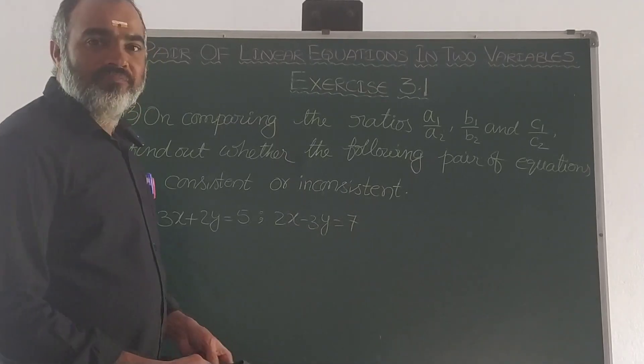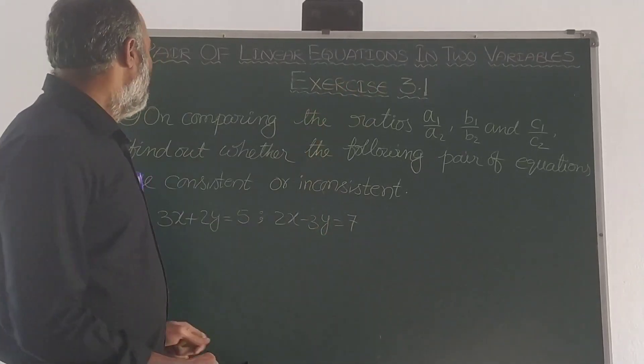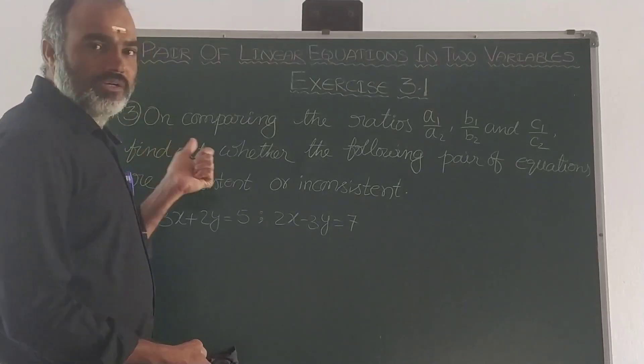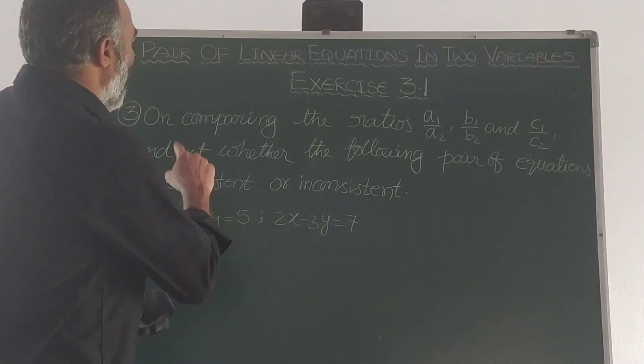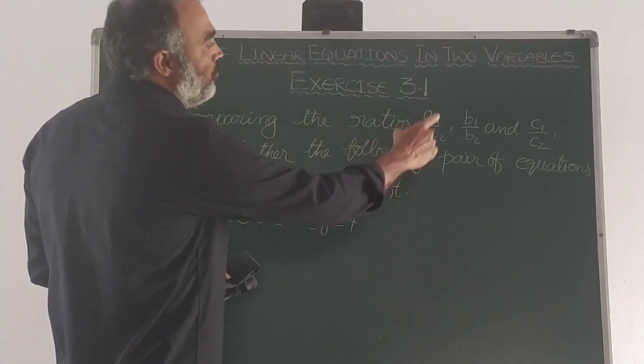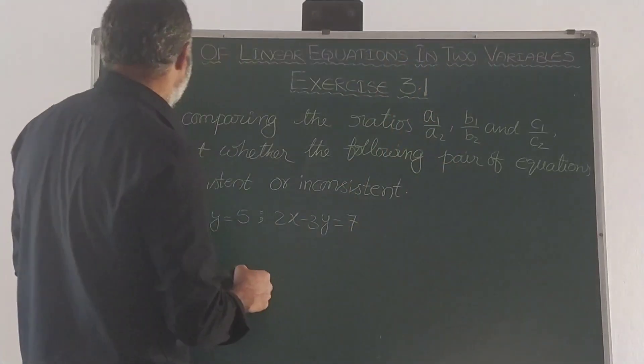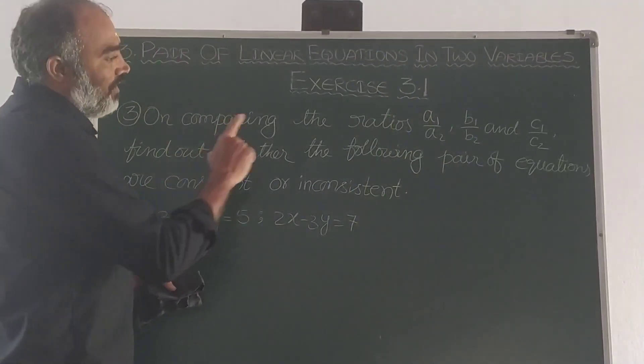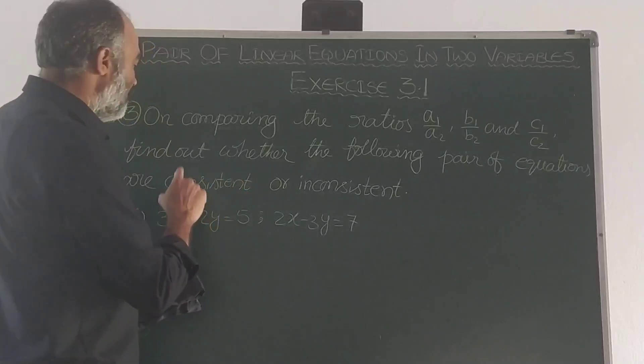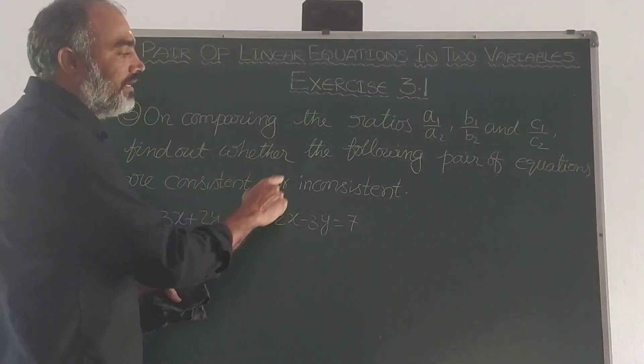Okay, in this class, exercise 3.1, question number 3 will be discussed now. I am comparing the ratio a1 by a2, b1 by b2, and c1 by c2. So, find out whether the following pair of equations are consistent or inconsistent.